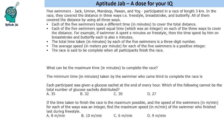Hello everyone, welcome to Aptitude Jab. This set says that there are five swimmers and they participated in a swimming race of length 3 km. In the race they covered the distance in three ways: freestyle, breaststroke, and butterfly. All of them covered the distance using all three ways — some part using freestyle, some part using breaststroke, and the remaining part using butterfly.